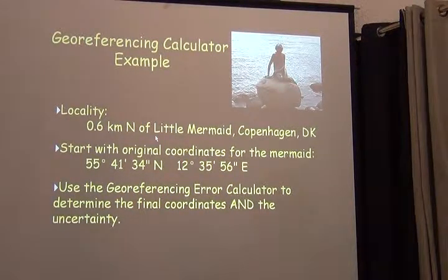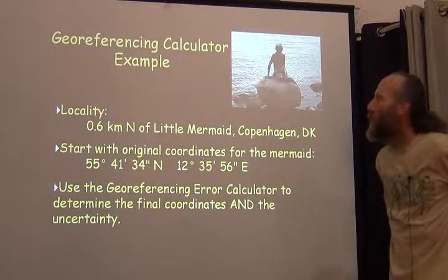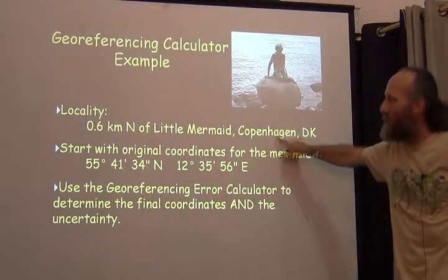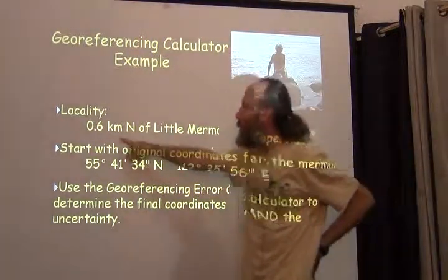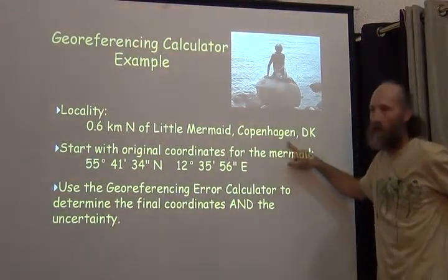Okay, what I had hoped was that we would have enough time for this example and this exercise where I'm given an original locality that looks like this: 0.6 kilometers north of the Little Mermaid in Copenhagen, Denmark.